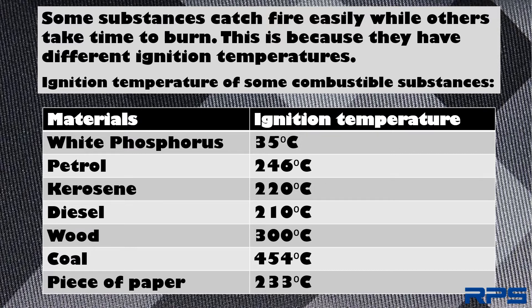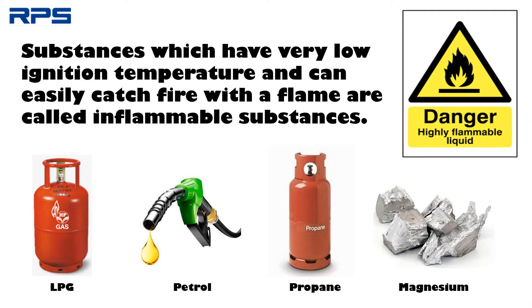Ignition temperatures of some combustible substances are shown in the table. Substances which have very low ignition temperature and can easily catch fire with a flame are called inflammable substances. LPG, petrol, propane, and magnesium are some examples of inflammable substances.